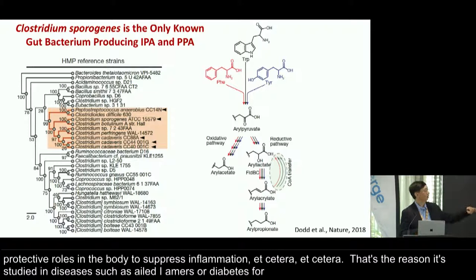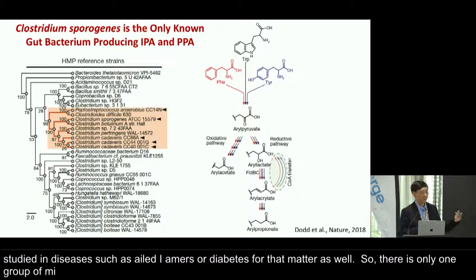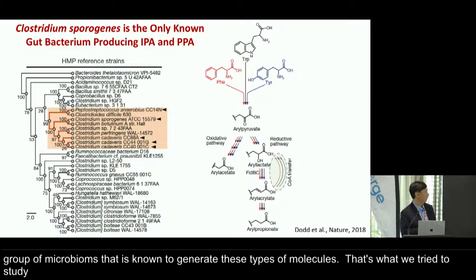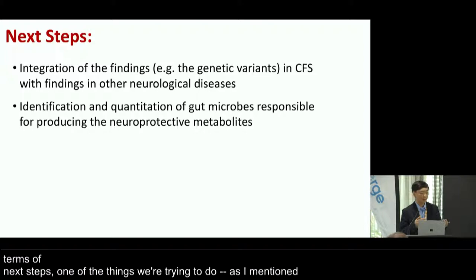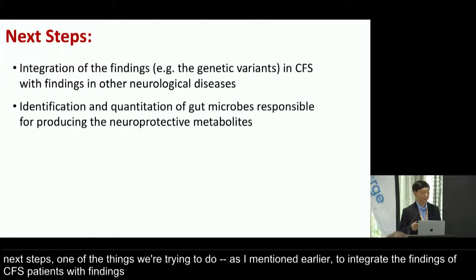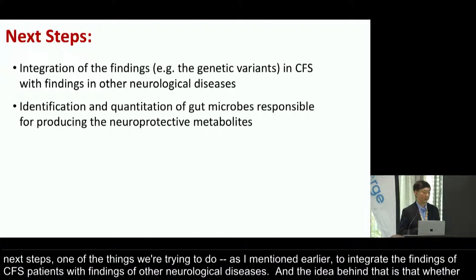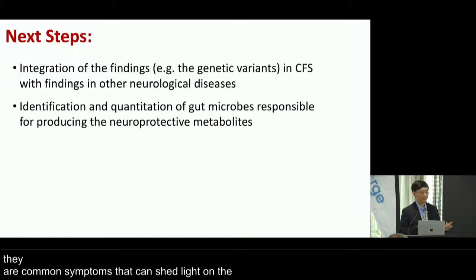There is only one group of microbiomes known to generate this type of molecule, and we're studying that in collaboration with David Asitman to identify these microbes and quantitate them. In terms of next steps, one thing we're doing is integrating findings of CFS patients with findings from other neurological diseases, to see whether common symptoms can shed light on potential mechanisms of the disease, since we need to borrow strength from somewhere.